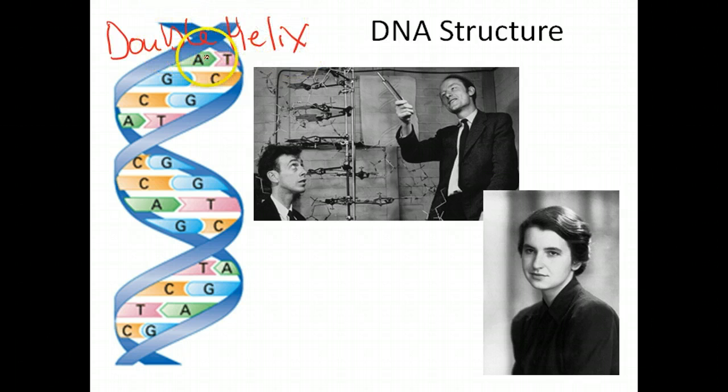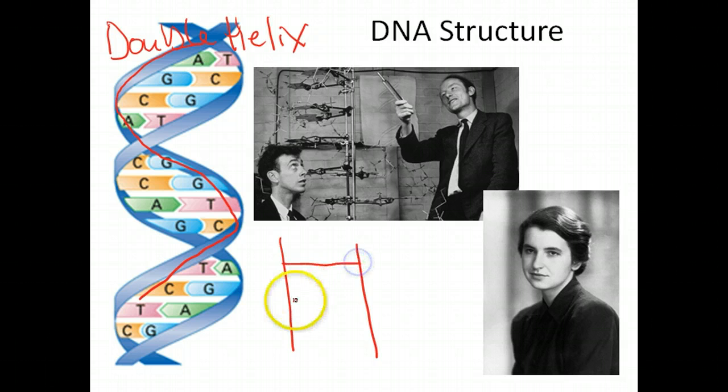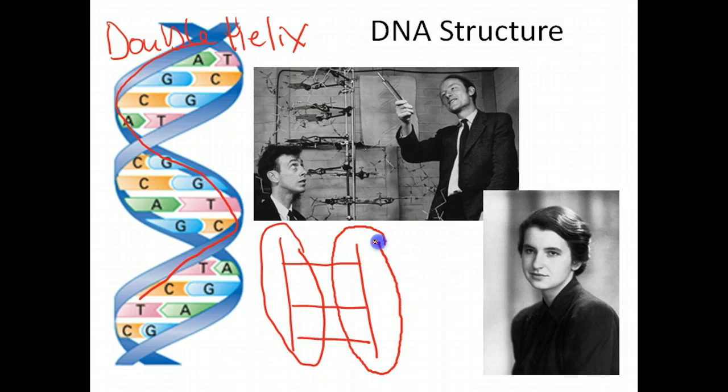A double helix is a ladder consisting of two strands that has this helical nature about it. It's a twisted ladder, and if you were to straighten out the helix, it would look just like a ladder. This would be one strand and this would be the second strand, so it's a double-stranded helix.